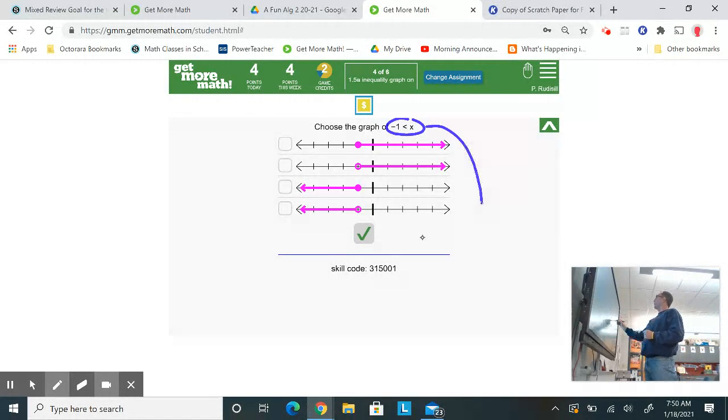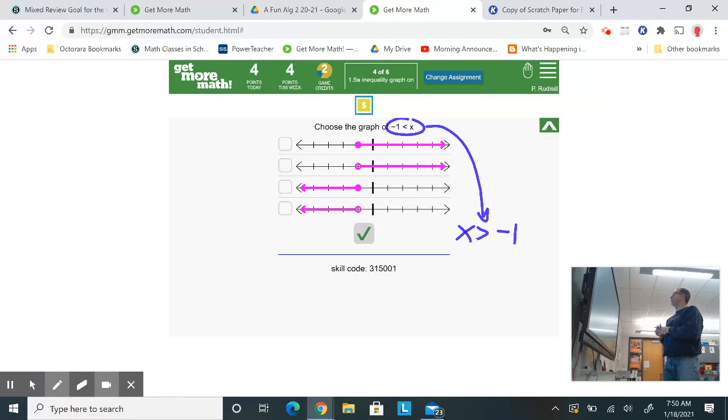But I like to write my variable first. So I need to reverse that sign so it becomes greater than. So I want all the numbers that are greater than negative 1. So negative 1, here's 0. Here are my 0s. So negative 1 would be right here. I want all the numbers that are greater than that, but not equal to. So it's got to be this one here.